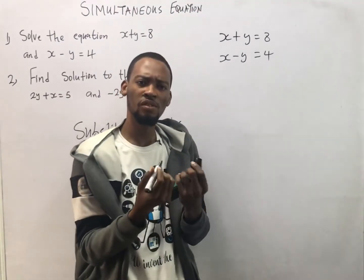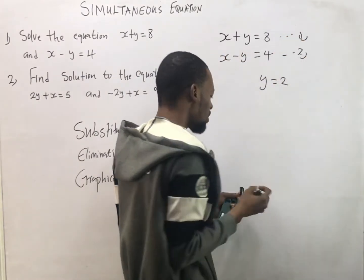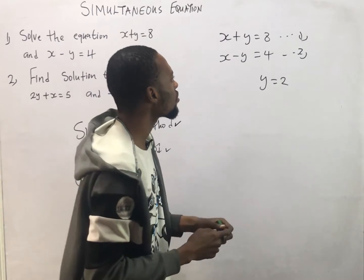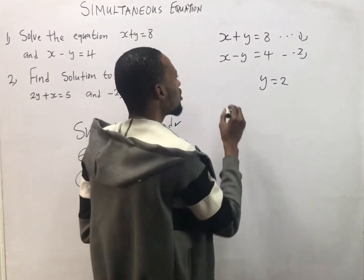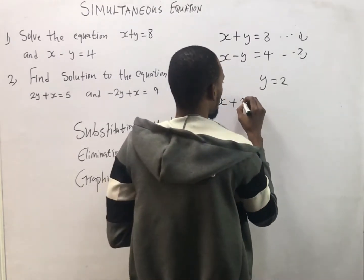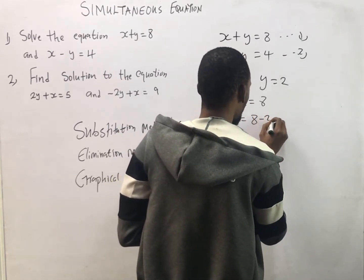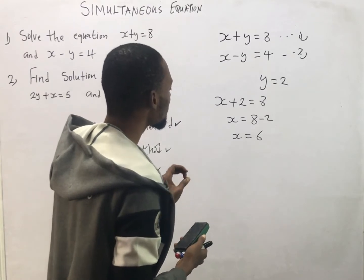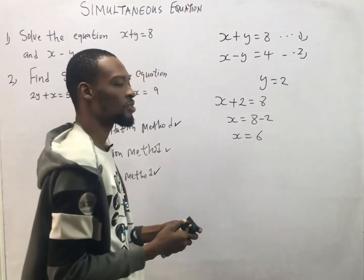We have 2Y equals 4. Dividing both sides by 2, Y equals 2. Now that we've gotten the value for Y, we substitute it into any of the equations. Choosing equation 1 and putting Y equals 2, we get S plus 2 equals 8, so S equals 8 minus 2, which gives S equals 6. The solution is S equals 6 and Y equals 2.